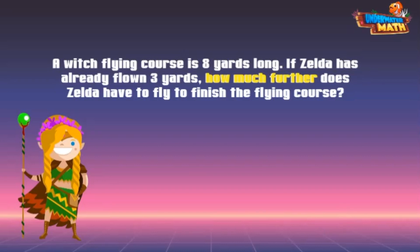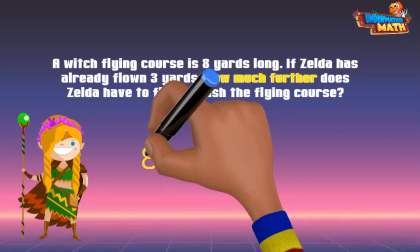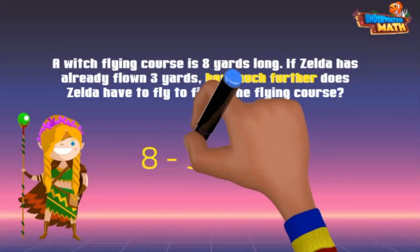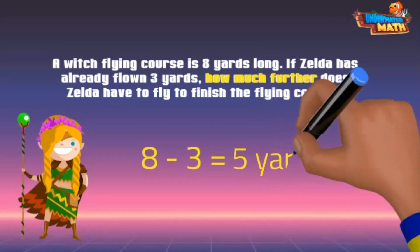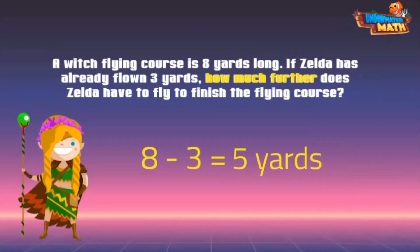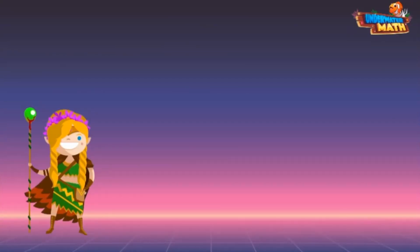The total length of the course is 8 yards, and if Celda has already flown 3 yards, we'll subtract 3 from 8, which gives us 5 yards. She still needs to fly 5 more yards to finish the course. Great job on the quick tutorial today!